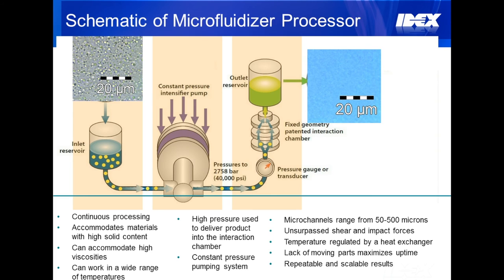One of the key characteristics of the microfluidizer processor is the constant pressure intensifier pump. This is important because it delivers all of the material at a very uniform pressure profile to the interaction chamber. The interaction chamber is the heart of our microfluidizer processor. It is a fixed geometry microchannel, which ensures that all of your material is being processed at a very consistent shear rate.